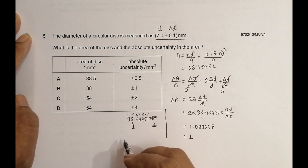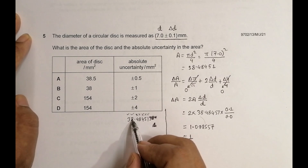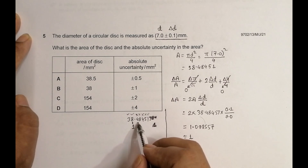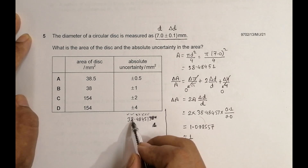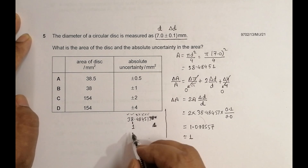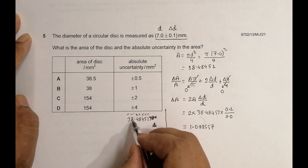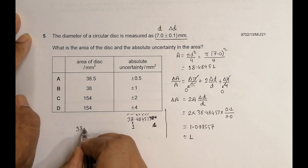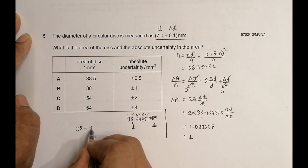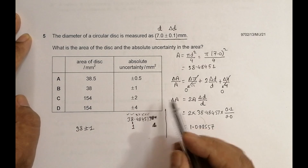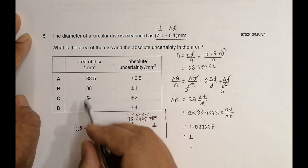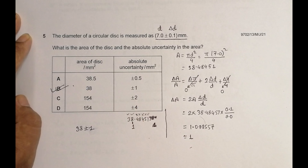So the area rounds to 38. Therefore the answer is 38 ± 1 mm². The uncertainty is 1, and the area is 38 — this is the correct choice.